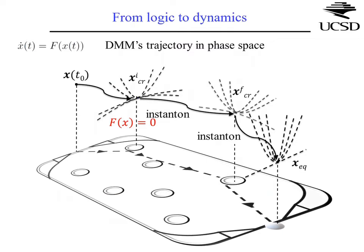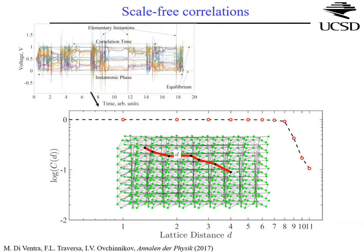I want to conclude by showing why these machines are so robust. They are robust against numerical noise, and if robust against numerical noise they must also be robust against physical noise. The machine traverses phase space through instantons — tunneling events in Euclidean space — until it finds a solution. If you look at the instantons as spikes in voltage versus time, they have a width of an RC time (R is resistance, C is capacitance). Examining correlations of the voltages in the circuit, they are flat until you hit the boundaries.